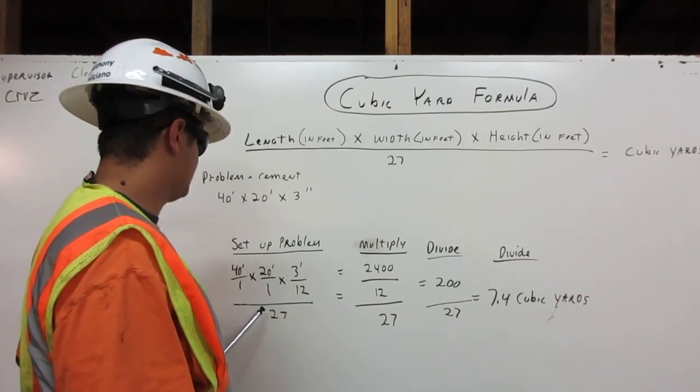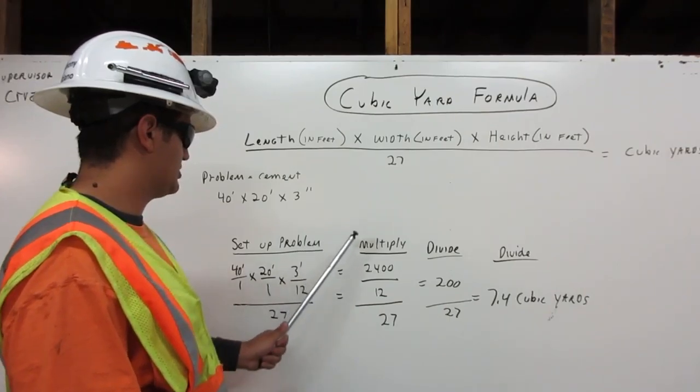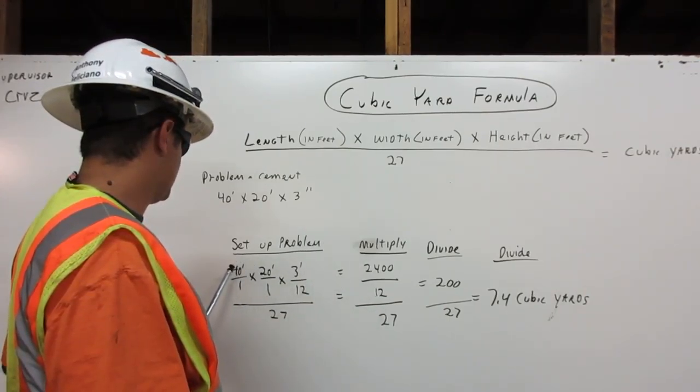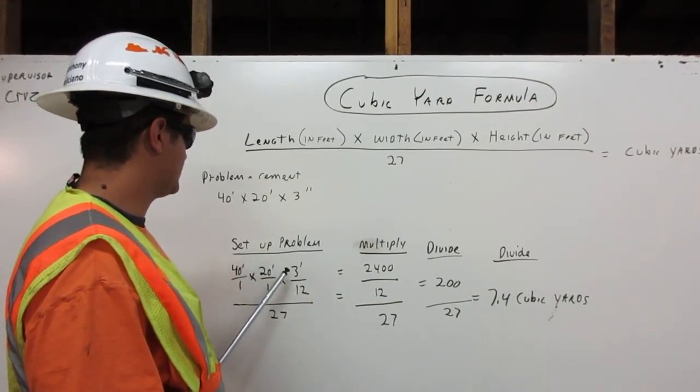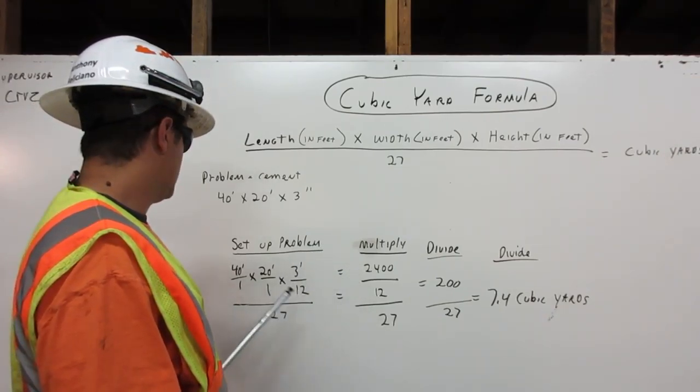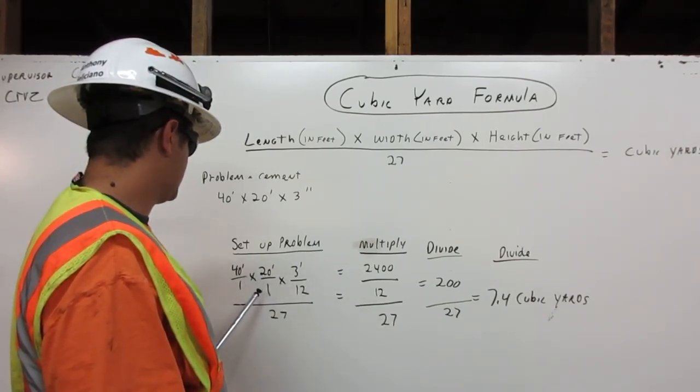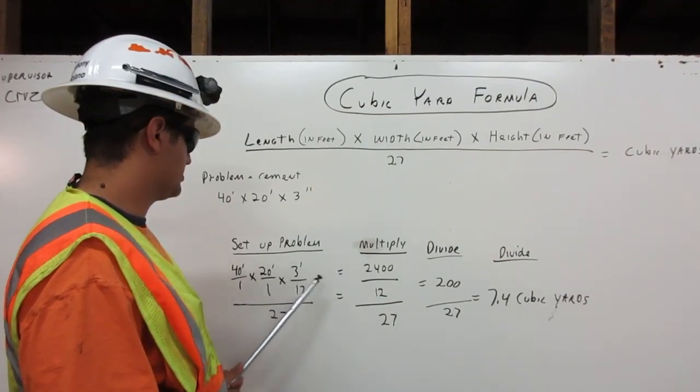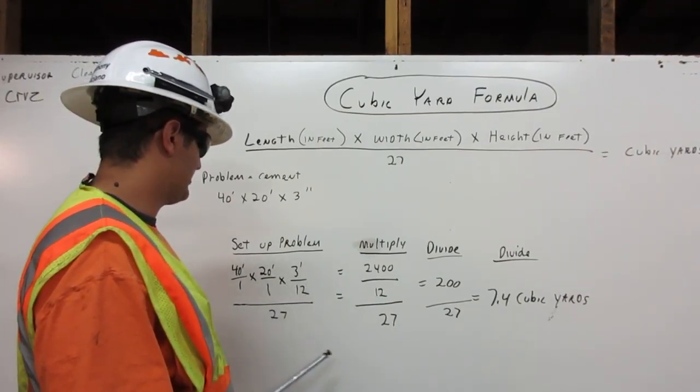That is all above 27. The next step is multiply. 40 times 20 times 3 equals 2400. 1 times 1 times 12 equals 12. And we bring the 27 over.